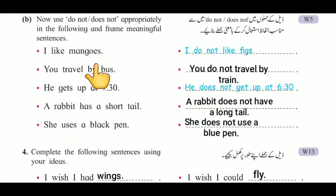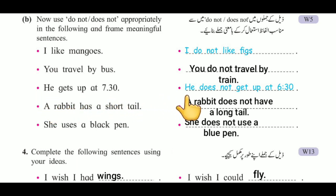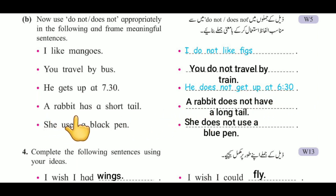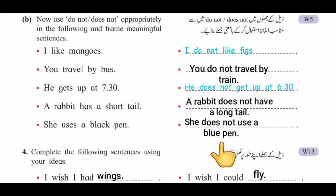In question B: 'I like mangoes' → 'I do not like figs.' 'You travel by bus' → 'You do not travel by train.' 'He gets up at 7:30' → 'He does not get up at 6:30.' 'A rabbit has a short tail' → 'A rabbit does not have a long tail.' 'She uses a black pen' → 'She does not use a blue pen.'